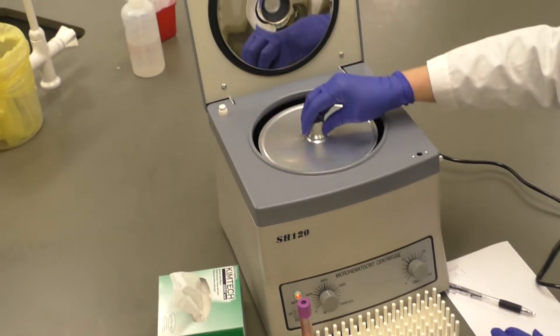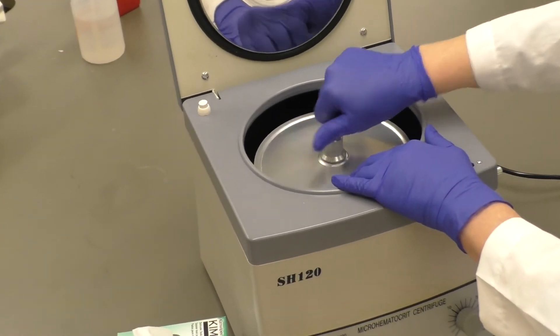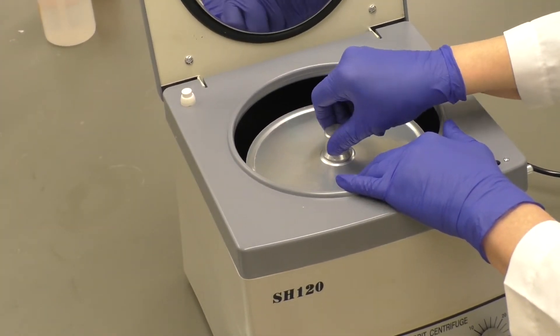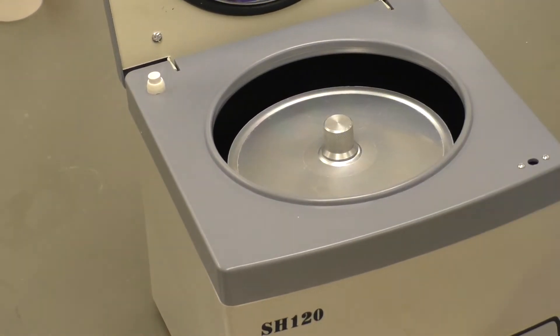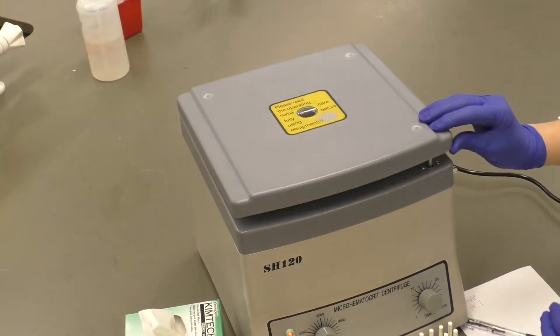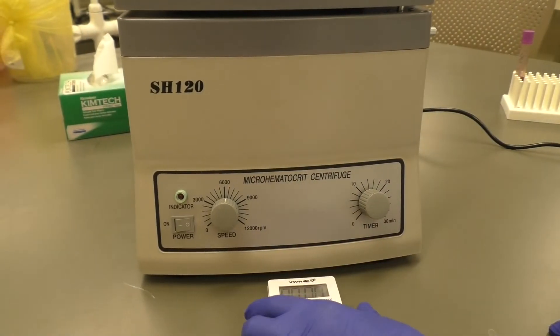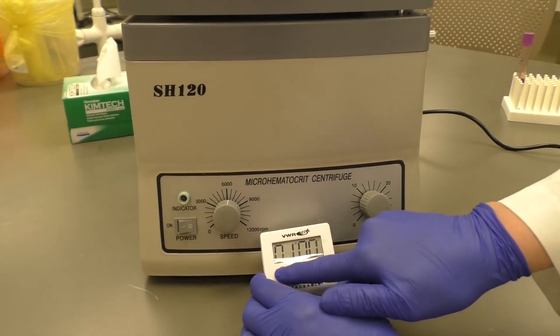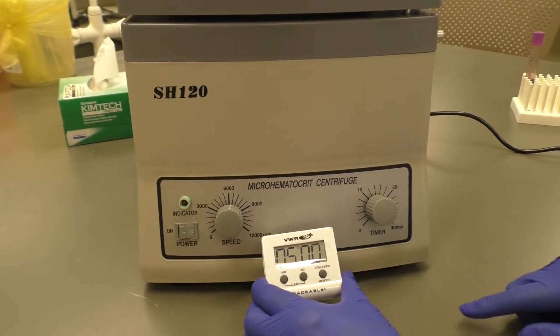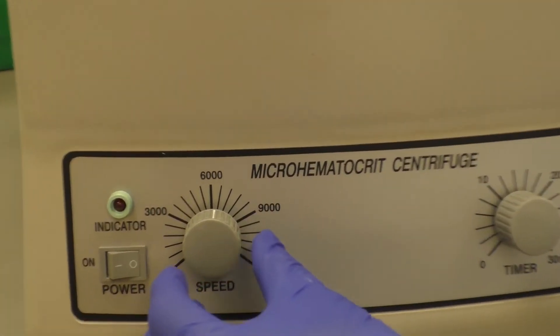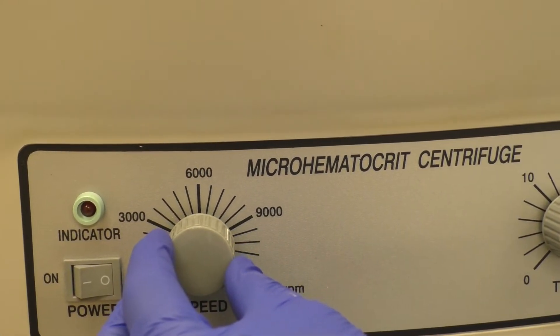Securely fasten the metal cover plate on top of the centrifuge rotor and close the centrifuge. Centrifuge for five minutes at 9,000 rpm.